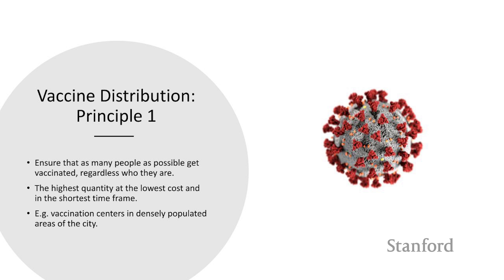So one potential policy would be to distribute vaccines in a way that ensures that as many people as possible get vaccinated, regardless who they are. This policy would ensure that the highest quantity of people were vaccinated at the lowest cost and in the shortest time frame. You could achieve this by setting vaccination centers in densely populated areas of the city so that you get as many people as possible.